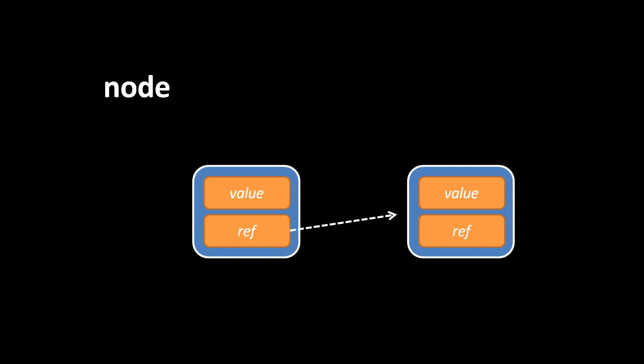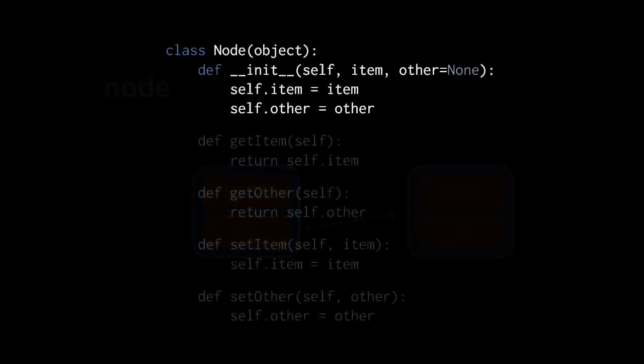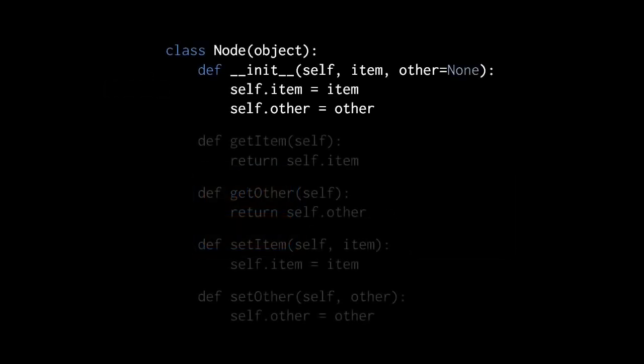As we'll see, nodes are the building blocks for larger data structures, such as the linked list, or in some cases, graphs and trees. Considering how to represent a node in code: in Python we would create a class and call it node. We'll have our node class simply inherit from the object class, which is the generic type at the top of Python's type hierarchy. In our constructor method, recall that in Python the object itself is passed to the first parameter, so by convention we call it self.